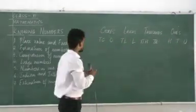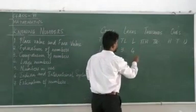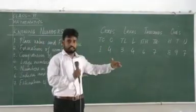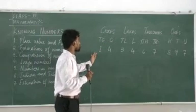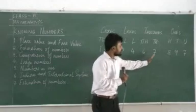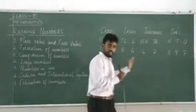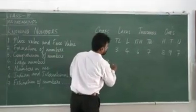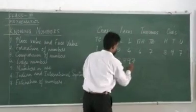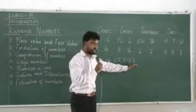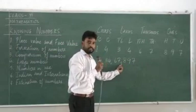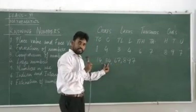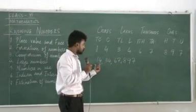Let us write down a number. If you want to write it together, we have the number 14 crore, 34 lakhs, 67,897. In writing this number, first I placed the ones place with three digits, then a comma. Then in the thousands place there are two digits, then a comma. In the lakhs place, again two digits, then a comma. And in the crores place, two digits. So the number is written as 1,43,46,7,897. Just check how I'm writing, placing commas after every two digits from the right after the first three.